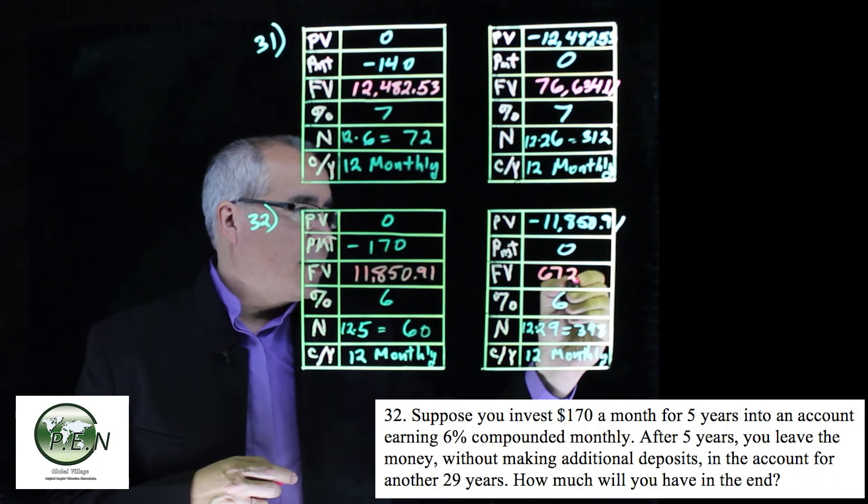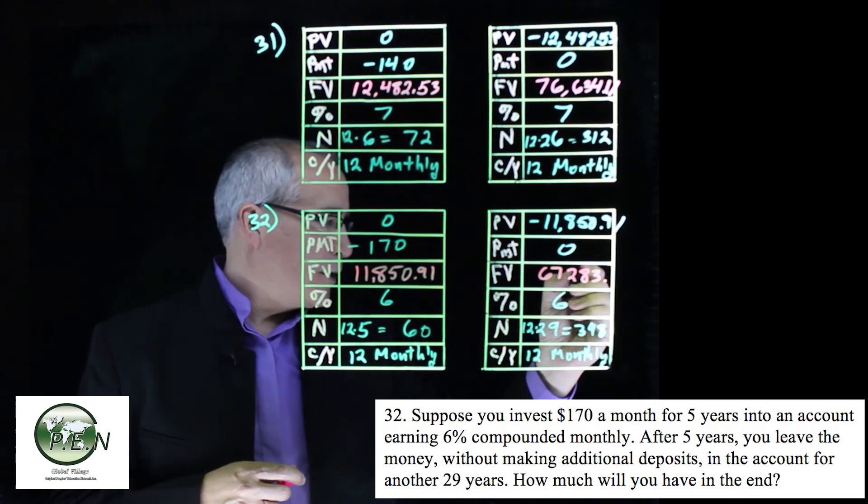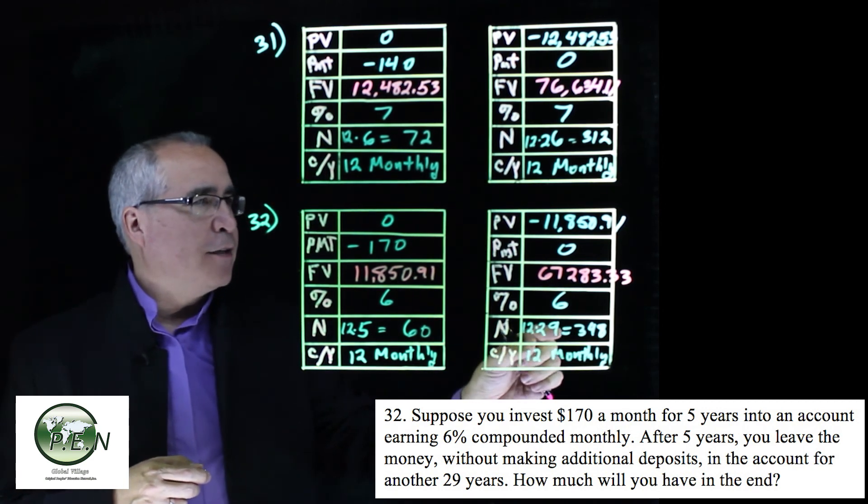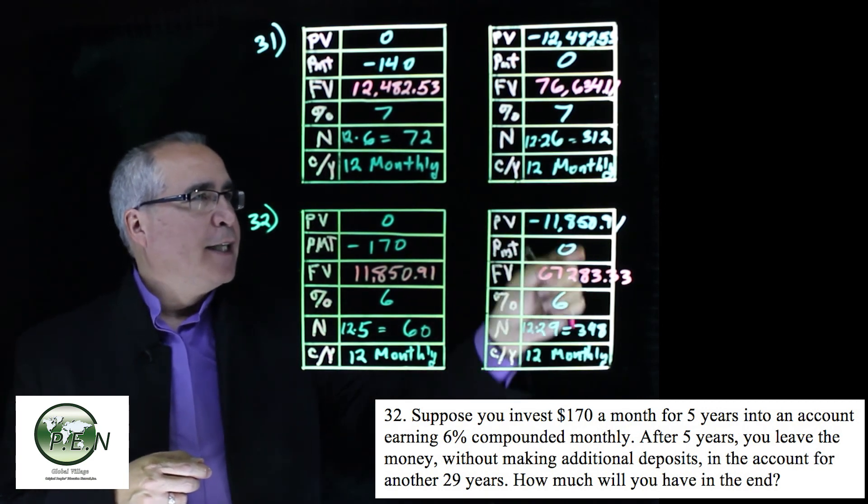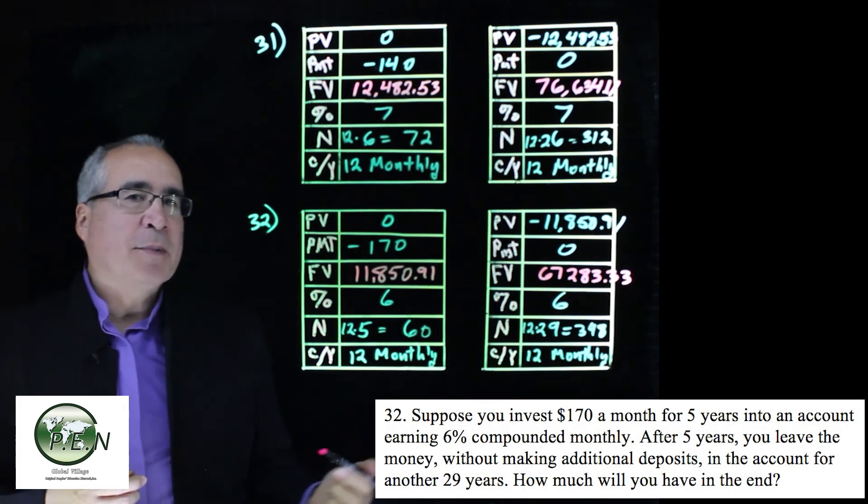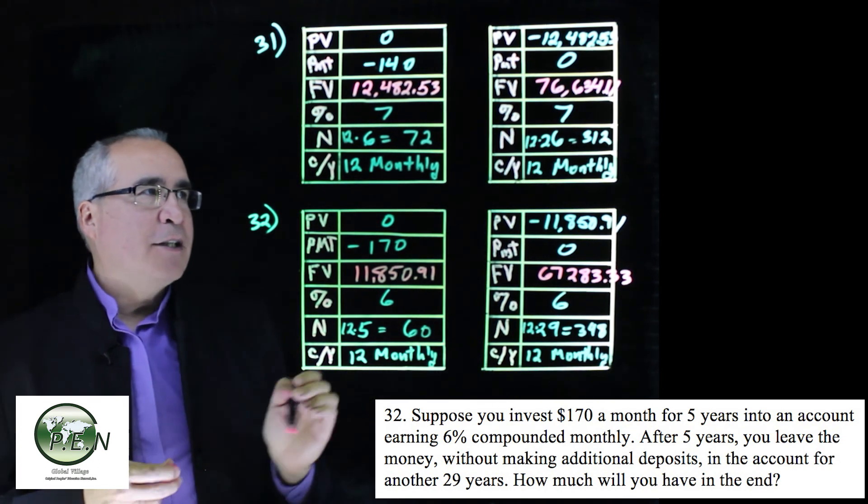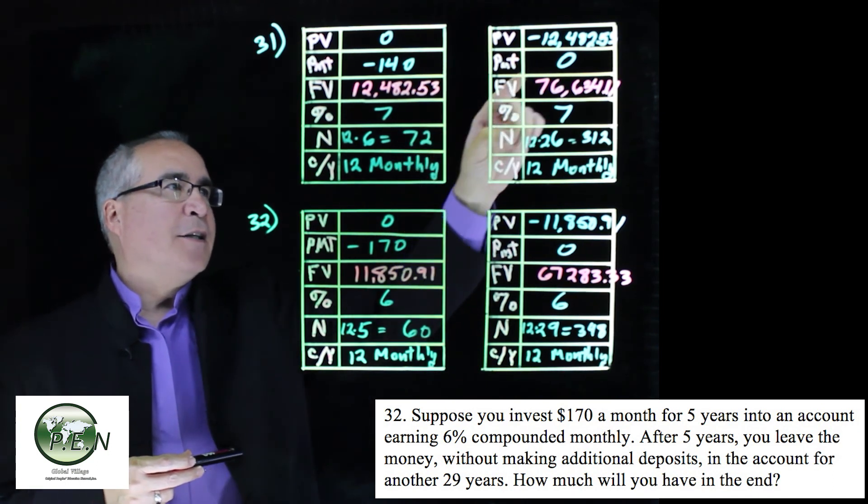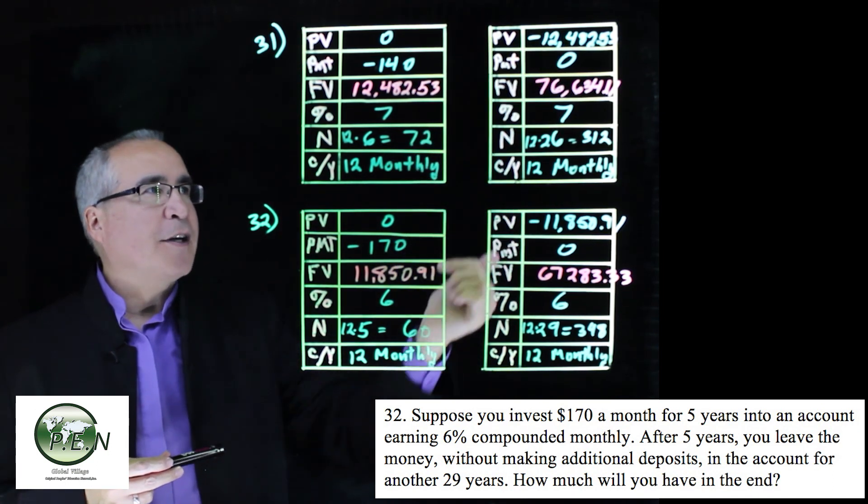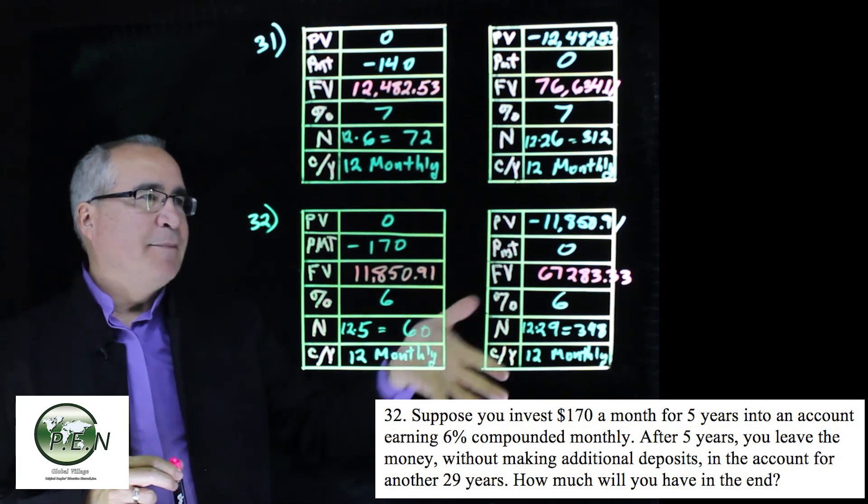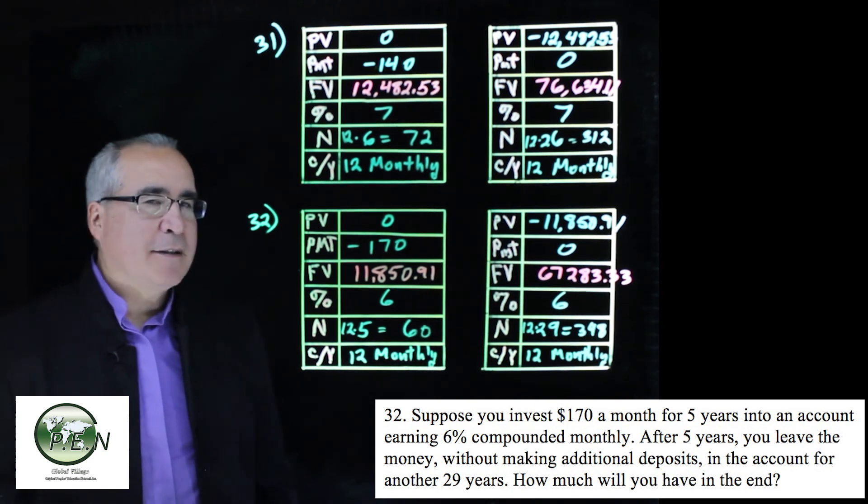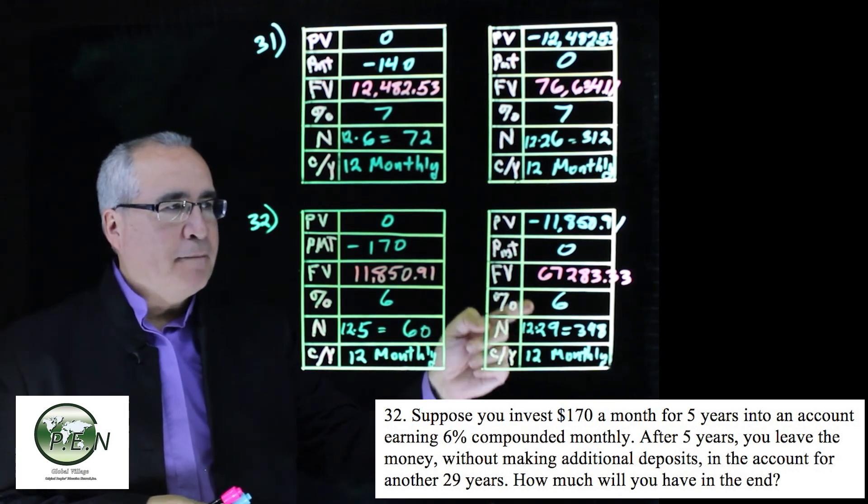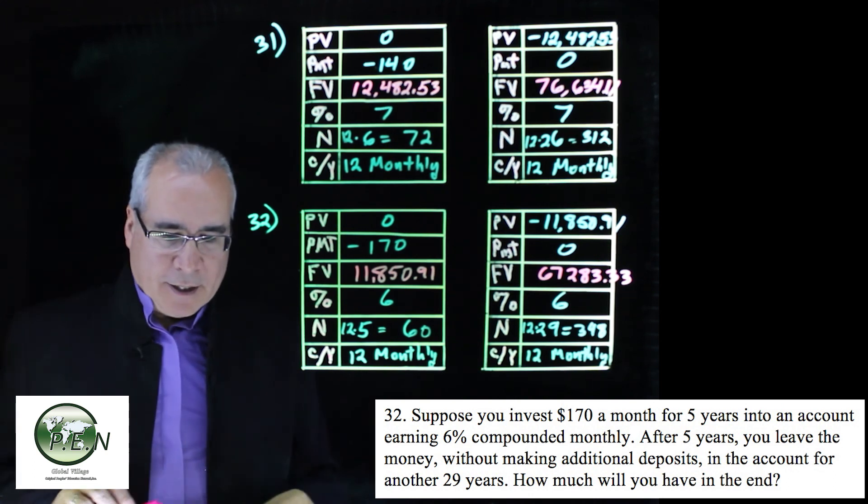Now we calculate the future value. We click the FV button and we ended up with $67,283.33. Now while this was more, this is 29 years instead of the 26, it didn't get as big. Again, interest does play a role. Having 1% additional interest in the first example was helpful. Also, we put in a little bit longer there, so we had a little bit more to start with—not quite a thousand, but you can compare the two. They're not quite apples to apples, but you can see the effect of both time and interest rate on an investment.